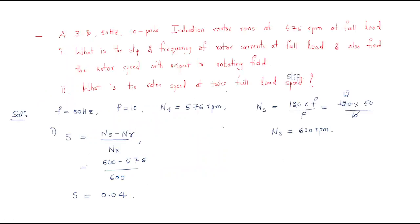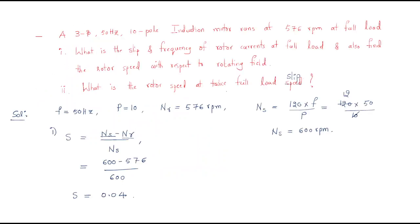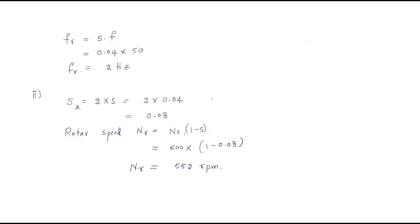To summarize the procedure: first, find the slip — we need the synchronous speed and rotor speed, then apply the slip formula. After that, rotor frequency is simply slip times supply frequency. For the second question, multiply the full load slip by two to get the new slip, then find the rotor speed using nr = ns(1 - s).